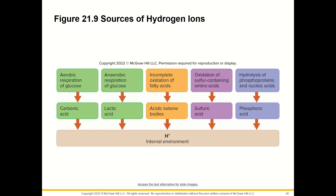Sources of hydrogen ions include: carbonic acid from aerobic respiration of glucose, lactic acid from anaerobic respiration of glucose, acidic ketone bodies from incomplete oxidation of fatty acids, sulfuric acid from oxidation of sulfur-containing amino acids, and phosphoric acid from hydrolysis of phosphoproteins and nucleic acids. Each of these contributes hydrogen ions to the environment because acids donate hydrogen ions.